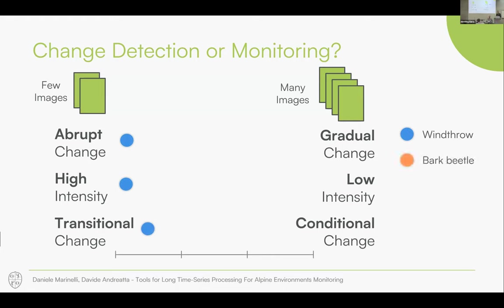Bark beetle is another example, unfortunately, for Trentino Alto Adige. Here we have a more gradual change — it is not possible to define clear pre- and post-event dates because of the relatively slow evolution of the phenomenon. It is a low-to-moderate intensity event, and it is both a conditional and transitional change in the longer term, because you end up with dead trees and therefore no more forest.